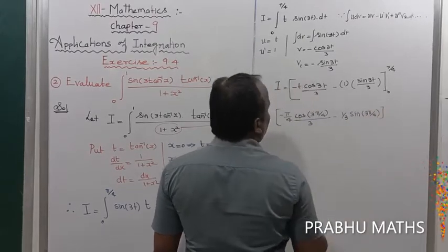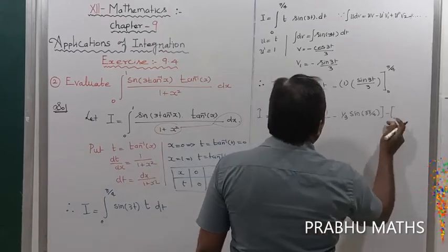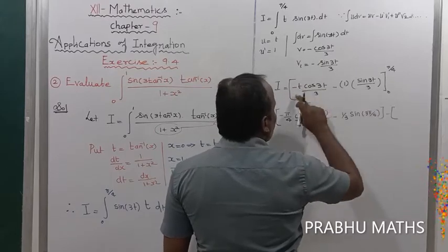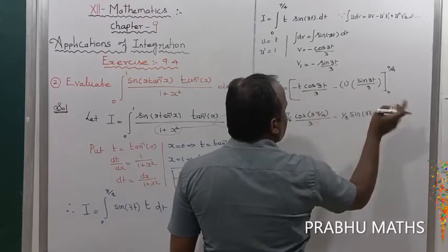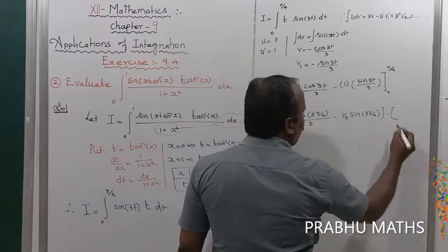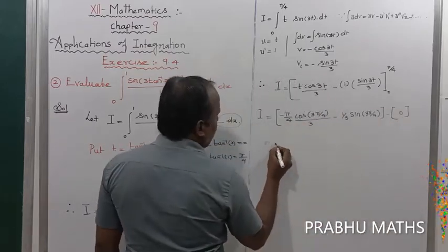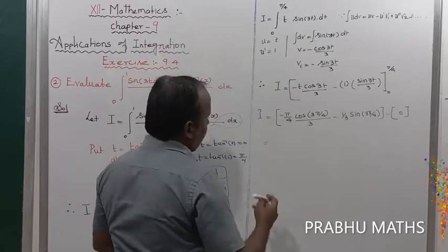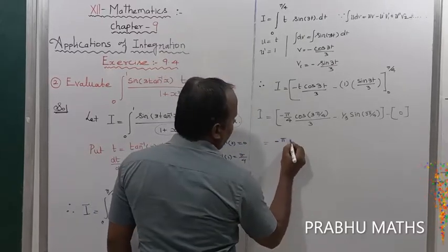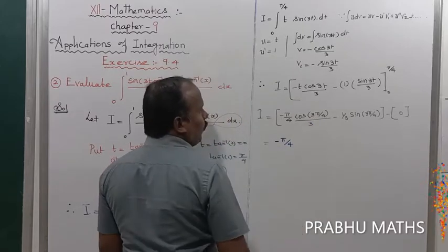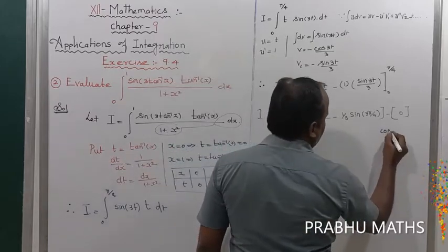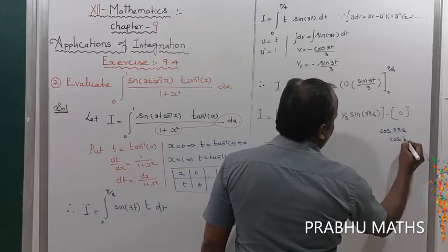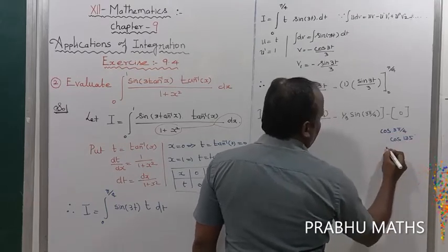Substituting the upper limit t = π/4: −(π/4)·cos(3π/4)/3 + sin(3π/4)/9. Substituting the lower limit t = 0: −0·cos(0)/3 + sin(0)/9 = 0. So i equals the upper limit value only.